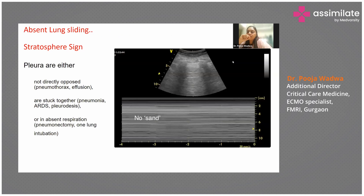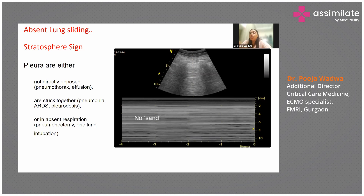When there is no sand pattern, only a sea pattern, this is called the stratosphere sign or barcode sign — like a barcode. This means the pleura is not sliding and is a sign of pneumothorax. It may also be seen when the pleura is stuck together, which is common in patients with pneumonia, ARDS, pleurodesis, previous pneumonectomy, or one-lung intubation.